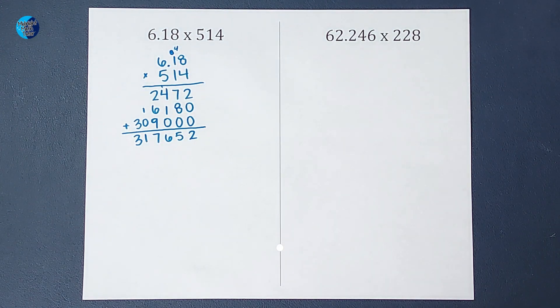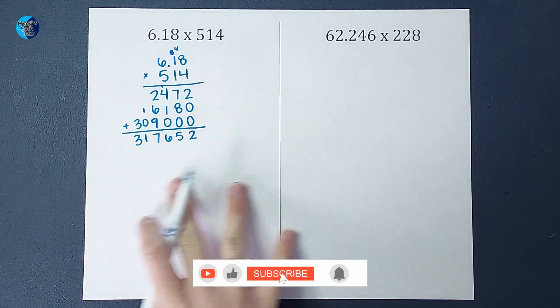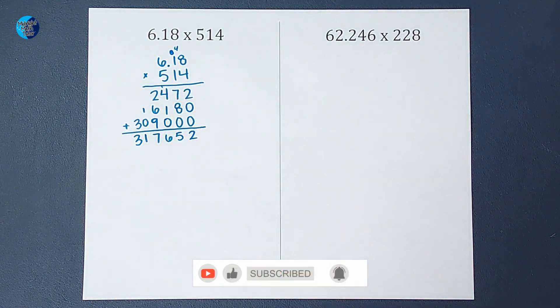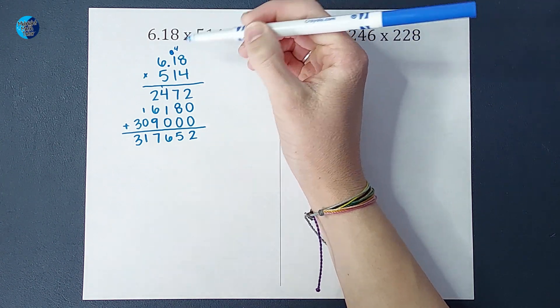I went ahead and multiplied all of those and then added it all together. And I got this big number. But this is when I need to remember, oh, this was a decimal problem, right? So where does my decimal go?